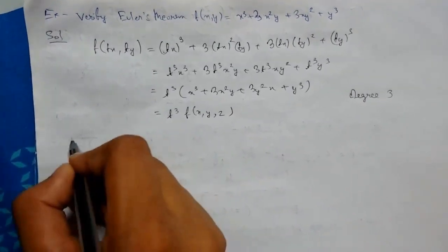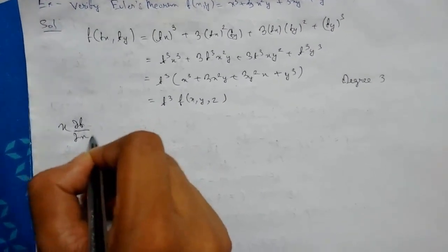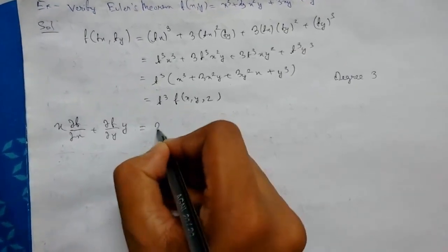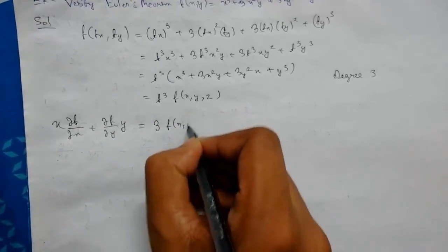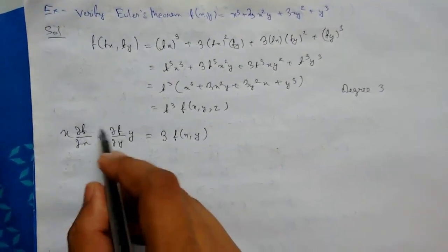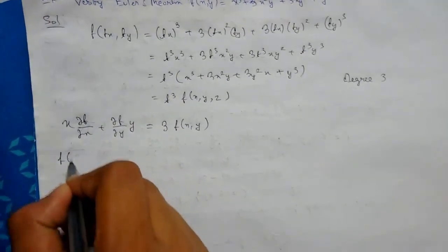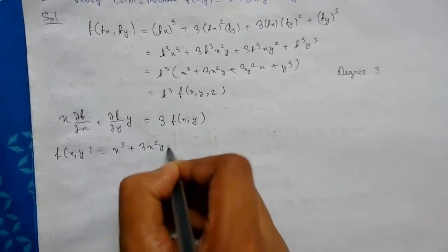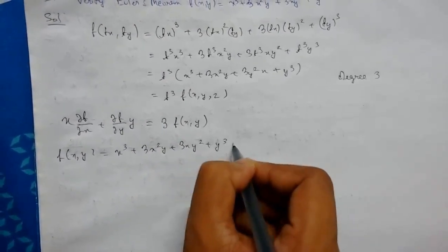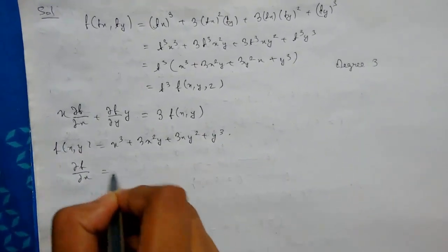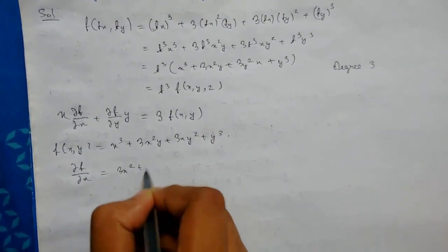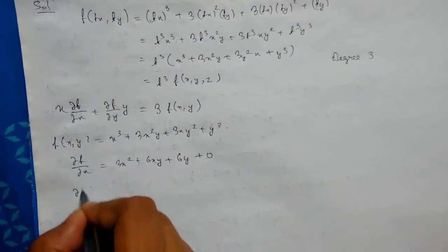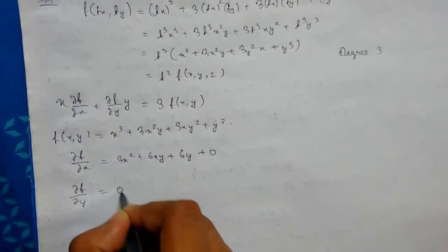Now we need to verify the statement of Euler's theorem. We have f(x, y) equals x cubed plus 3x squared y plus 3x y squared plus y cubed. So del f del x equals 3x squared plus 6xy plus 3y squared, keeping y constant. And del f del y equals 3x squared plus 6xy plus 3y squared, keeping x constant.